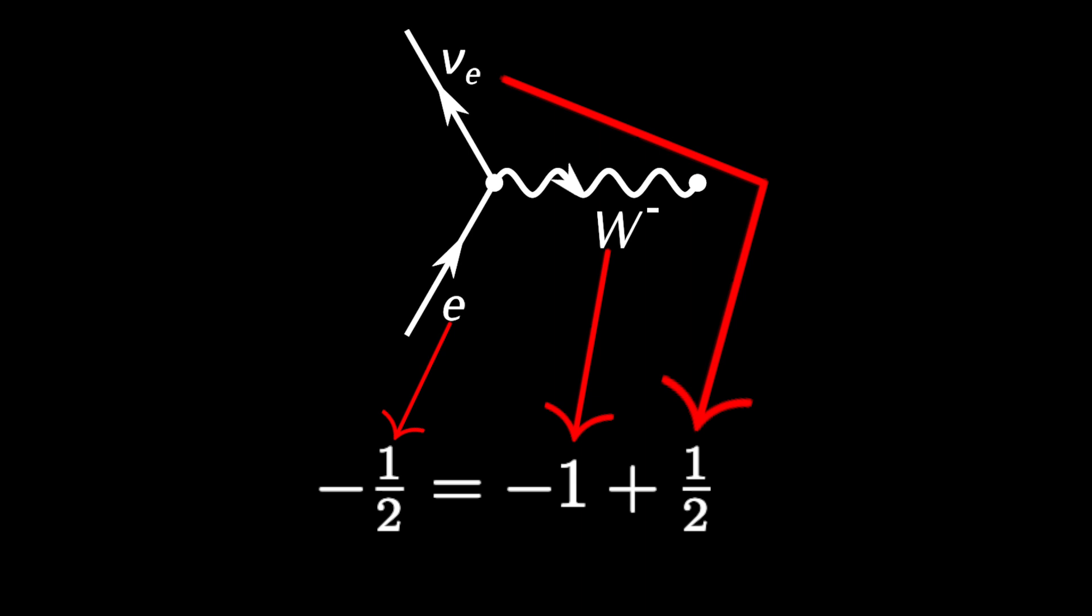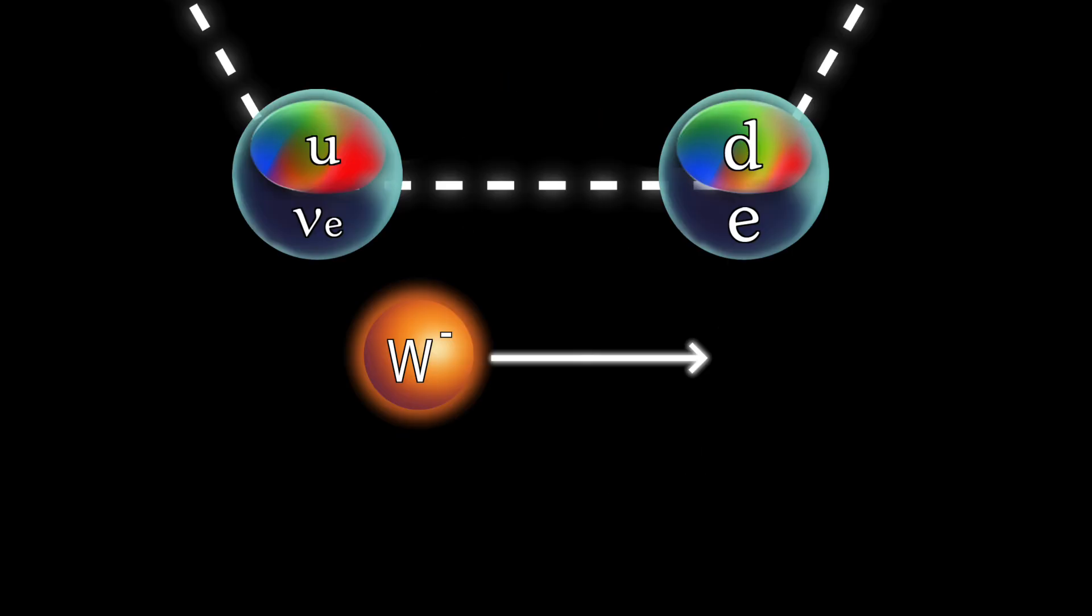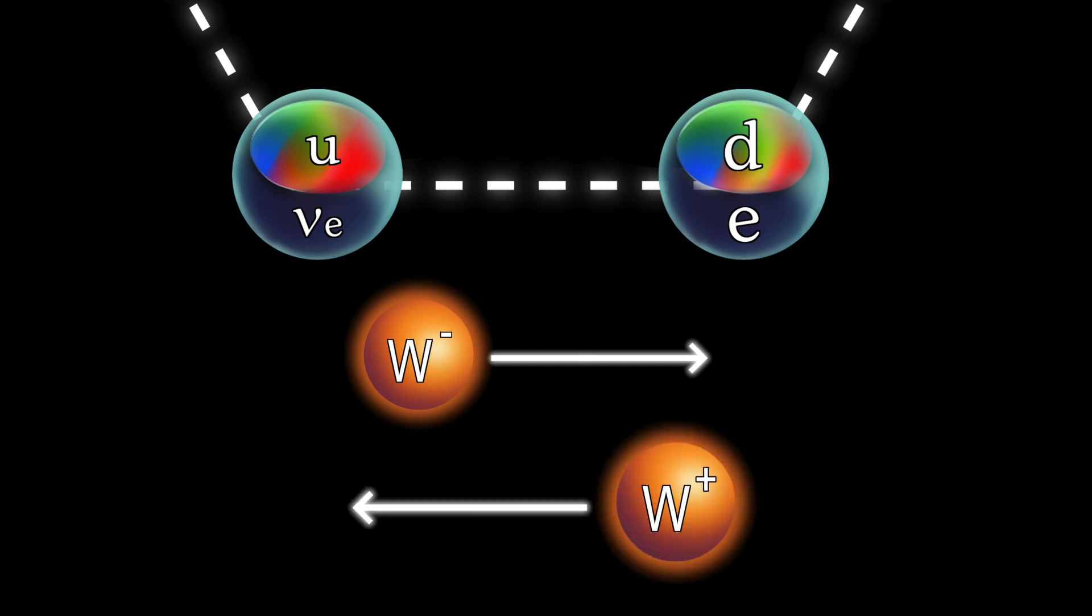I know this sounds weird, but hey, the math checks out! This process is like following this arrow in reverse, but another alternative would be for the electron to absorb a W+, gaining one unit of isospin, and that would also result in it becoming a neutrino. Now, let's look at the quarks.